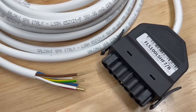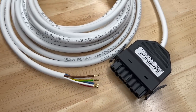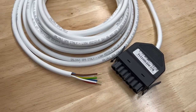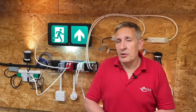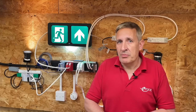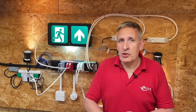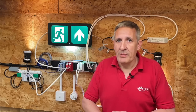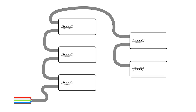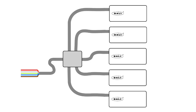The cables typically used to wire DALI systems are regular mains cable — you don't need to use twisted pairs or screened cable. The DALI bus can be wired as loop-in and loop-out from one fixture to the next, as a star configuration, or combinations of both.